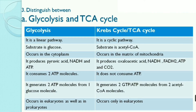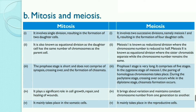Krebs cycle occurs only in eukaryotes. Second, mitosis and meiosis. Mitosis involves a single division resulting in two daughter cells, whereas meiosis involves two successive divisions — meiosis 1 and 2 — resulting in four daughter cells. Mitosis is known as equational division as daughter cells have the same chromosome number as the parent cell. Meiosis 1 is known as reductional division where chromosome number is reduced to half. Meiosis 2 is equational division where sister chromatids separate.